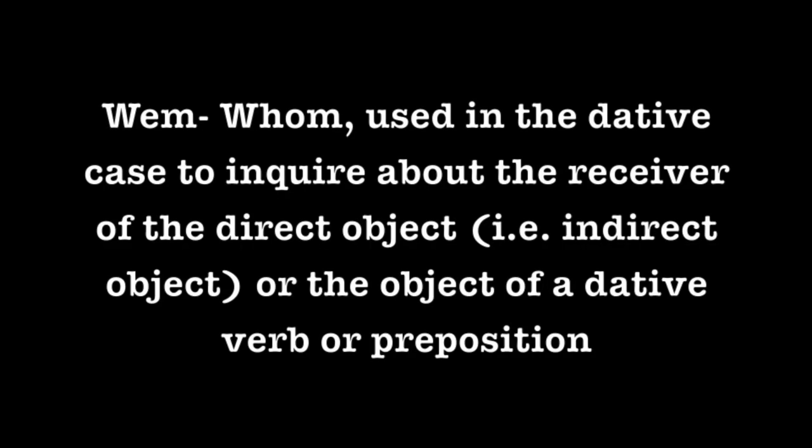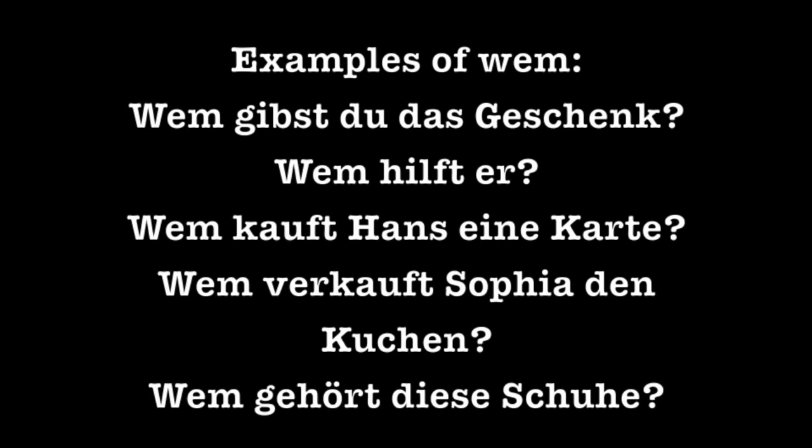The next question word also means 'whom' and it is Wem. It's used in the dative case to inquire about the receiver of the direct object — i.e. the indirect object — or the object of a dative verb or preposition. Some examples: Wem gibst du das Geschenk (whom are you giving the gift?), Wem hilft er (whom is he helping?) — Wem is used here because helfen is a dative verb — Wem kauft Hans eine Karte (whom is Hans buying a card/ticket?), Wem verkauft Sophia den Kuchen (whom is Sophia selling the cake?), Wem gehört diese Schuhe (to whom do these shoes belong?) — again using Wem because gehören is a dative verb.